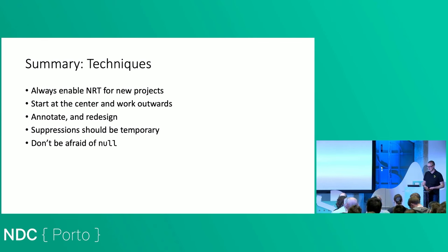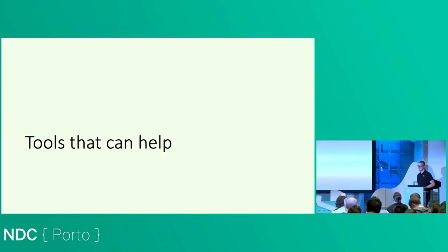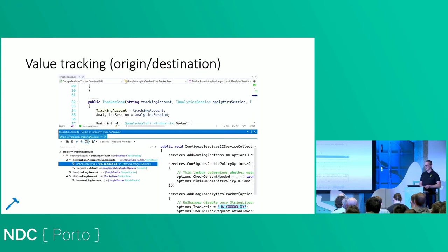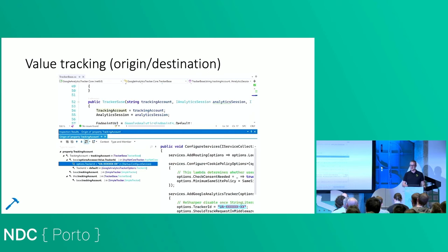In terms of techniques: always enable for new projects, start in the center, work outwards, start with your DTOs and so on. Annotate and maybe redesign wherever needed. Suppressions are temporary. And don't be afraid of null. Now let's talk about the tools that can help.